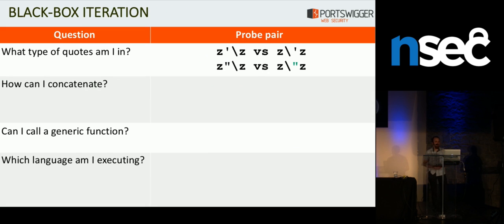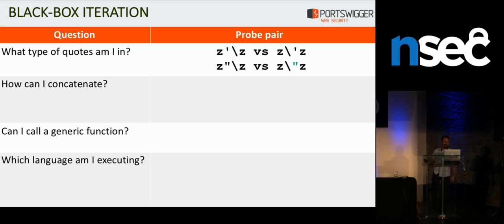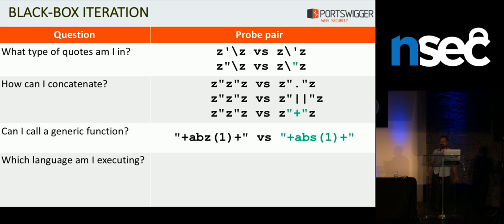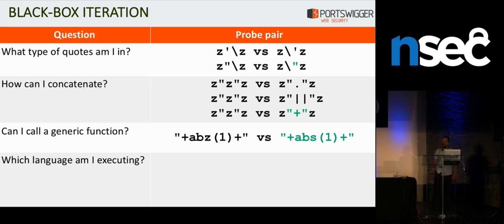The true power of this technique is that we can use the answers from these questions to decide what to do next. For example, having figured out that we're in a double-quoted string, we can then efficiently try to figure out automatically what character the server uses for concatenation. Here we've tried a few possibilities and found that plus works for concatenation. Knowing that, we can then easily try to inject a generic function call — the abs function — chosen specifically because it exists in almost every language out there. And if that works, we pretty much know that we've got code execution in some kind of language. It would be useful to know which language, so we can follow up with a bunch of probe pairs using functions that only exist in one language.